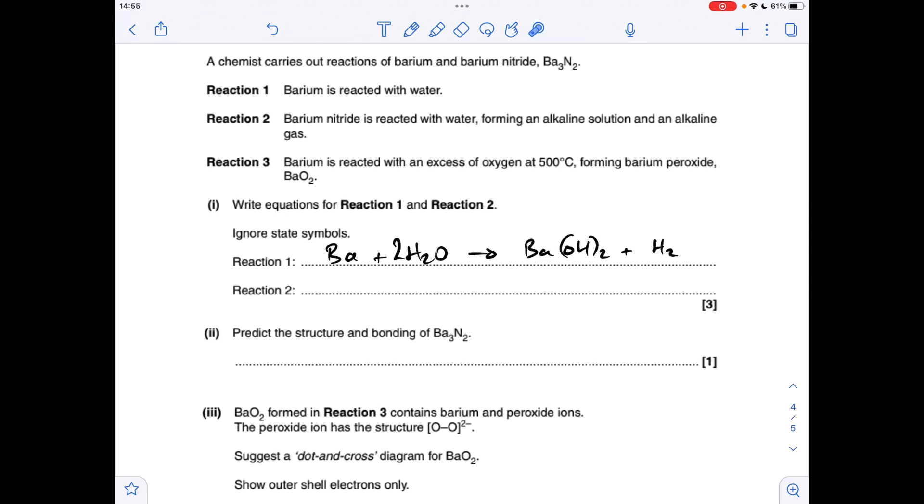Reaction two, barium nitride is reacted with water, forming an alkaline solution, so that's going to be barium hydroxide again. The alkaline gas is going to be ammonia, NH3. So there's the unbalanced equation, so the first thing we'll do is put a 3 in front of the Ba(OH)2, a 2 in front of the NH3, which means we need a 6 in front of the H2O.